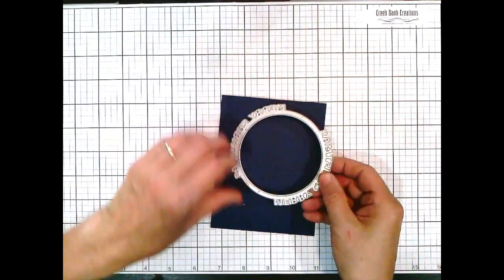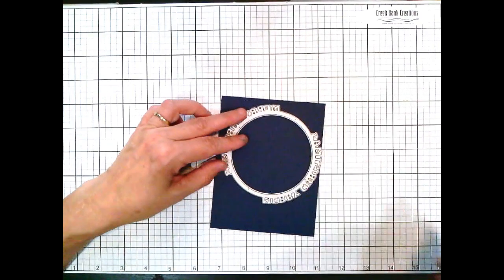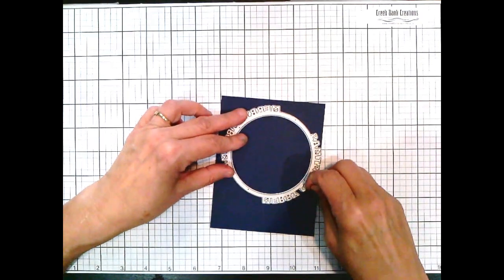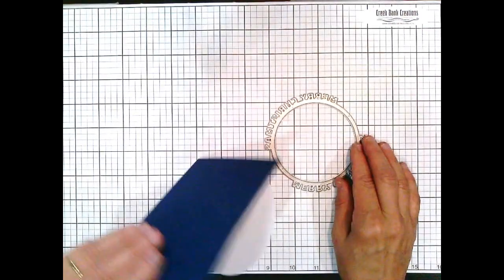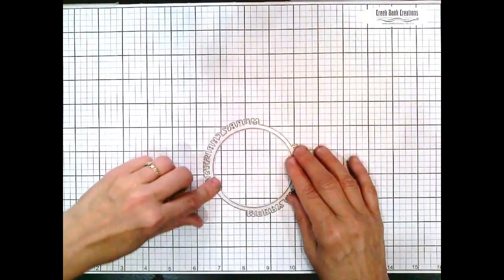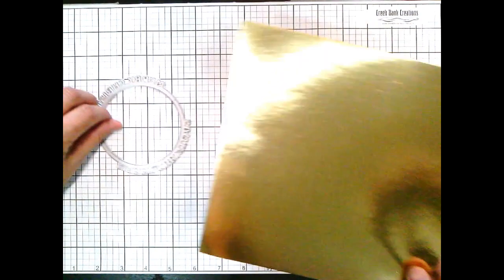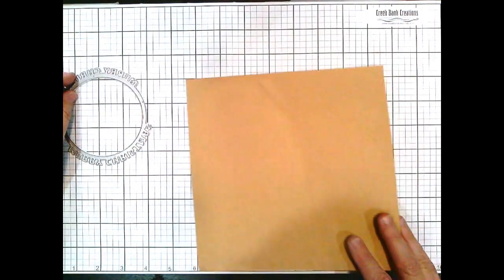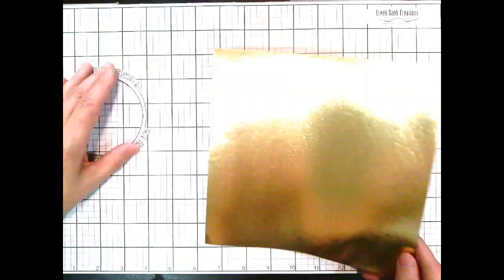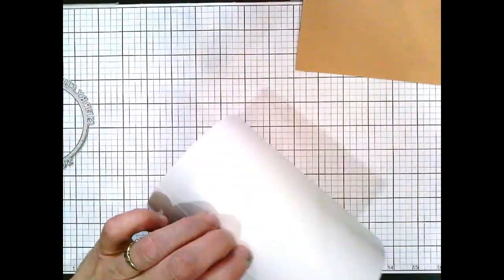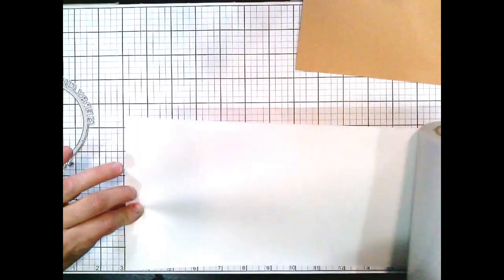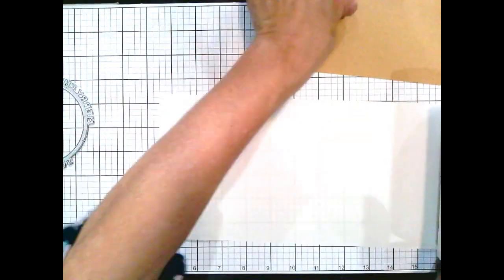So the question becomes, how do you die cut that and get it to adhere to your paper? And I want to show you how I do that. So we have our die and I'm going to use some foil paper, and I'm going to die cut it. So what I'm going to do is turn my paper over.